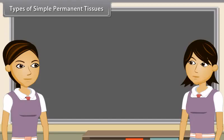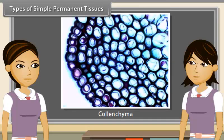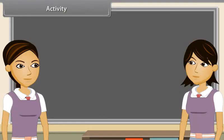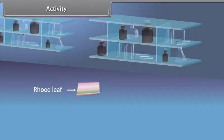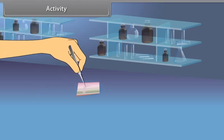Permanent tissues are of two types on the basis of the nature of their cells: simple permanent tissues and complex permanent tissues. Simple permanent tissues are composed of cells which are functionally and structurally similar, and are of three types: parenchyma, collenchyma and sclerenchyma. Parenchyma is made up of cells with thin primary walls that retain their protoplasm. Collenchyma is made up of cells with thick primary walls that retain their protoplasm. Sclerenchyma is made up of cells with lignified secondary walls that have lost their protoplasm at maturity — that is, they are dead.